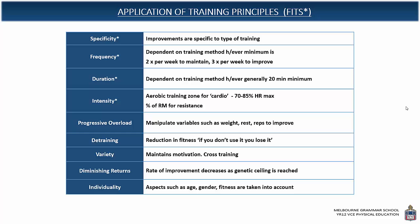In terms of frequency, it's how often a training program is undertaken, and it depends on the program. For example, plyometrics always requires a rest day after because it's so taxing on the body, whereas an endurance-based program can be undertaken up to five or even seven times a week depending on how elite the athlete is. It's generally accepted that you need to train a fitness component twice a week to maintain it and three times a week to improve.